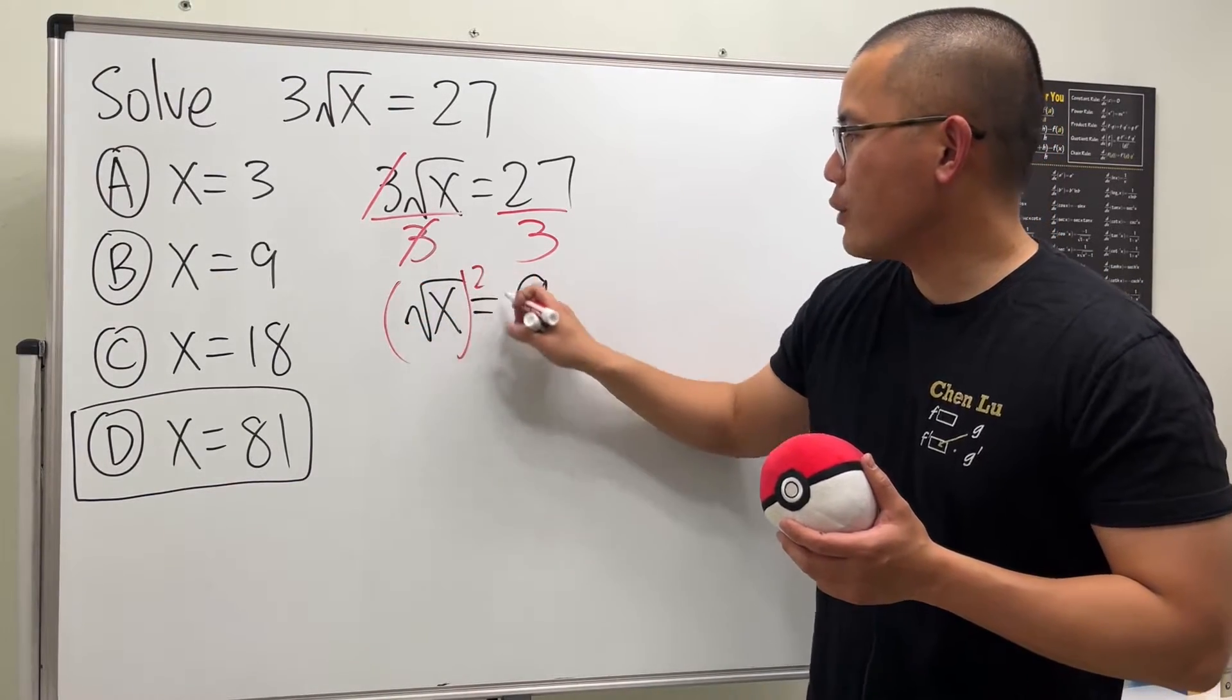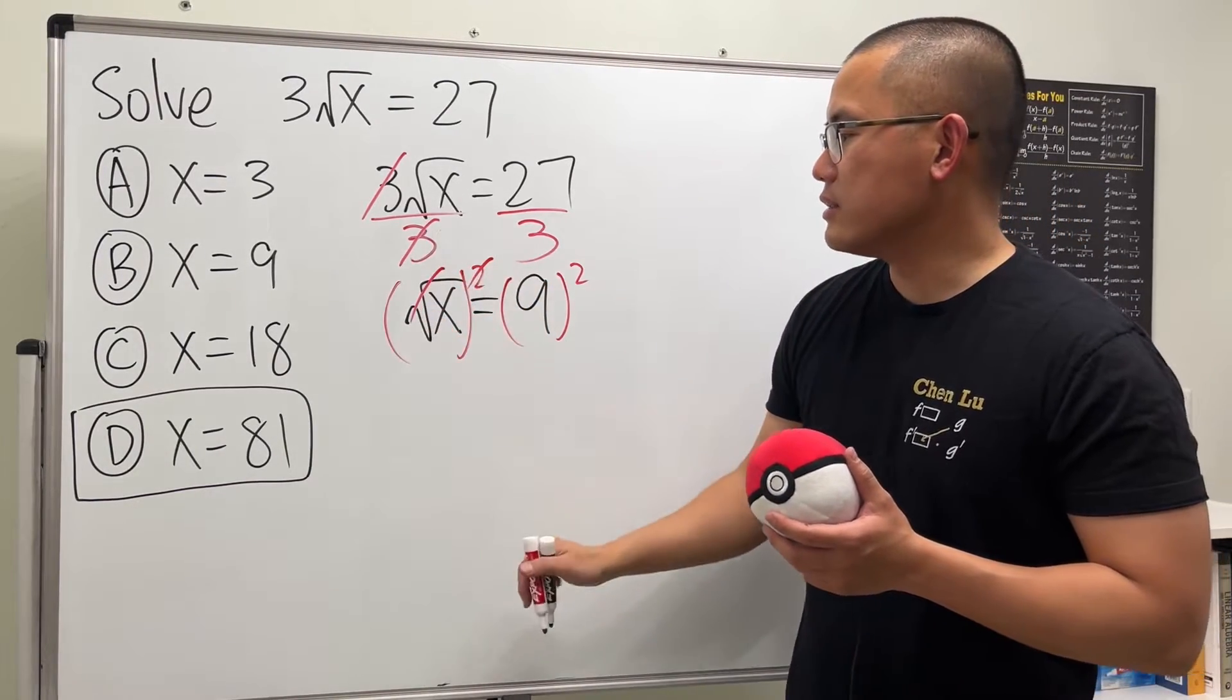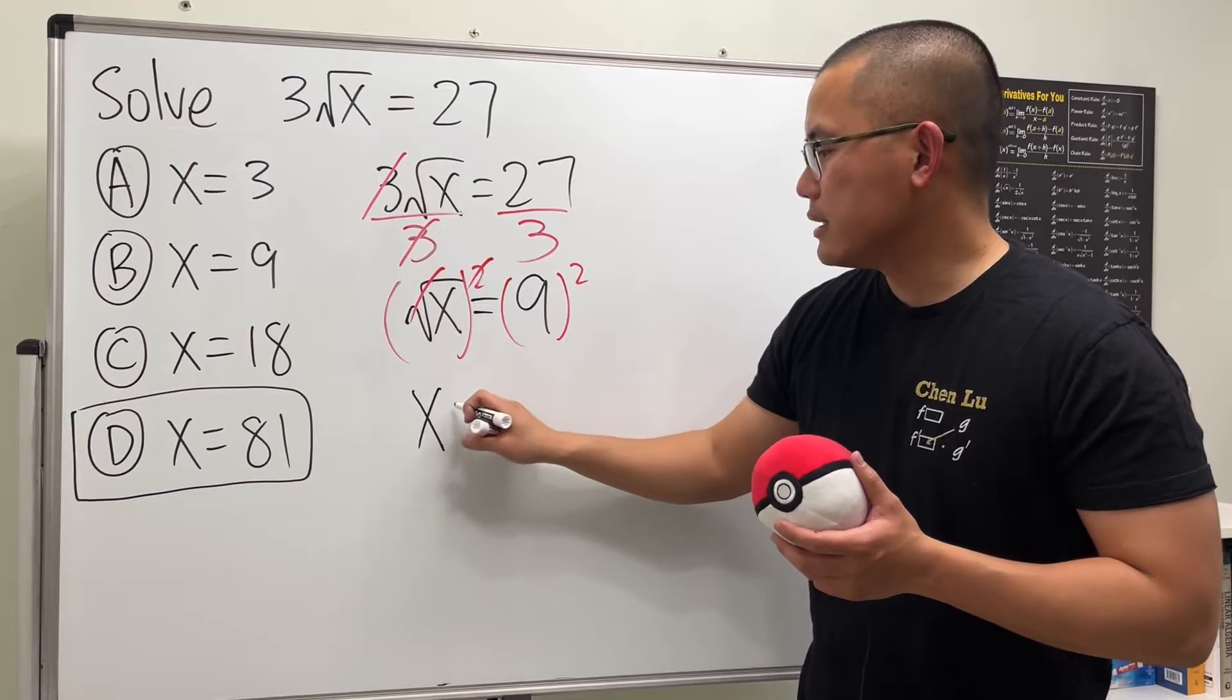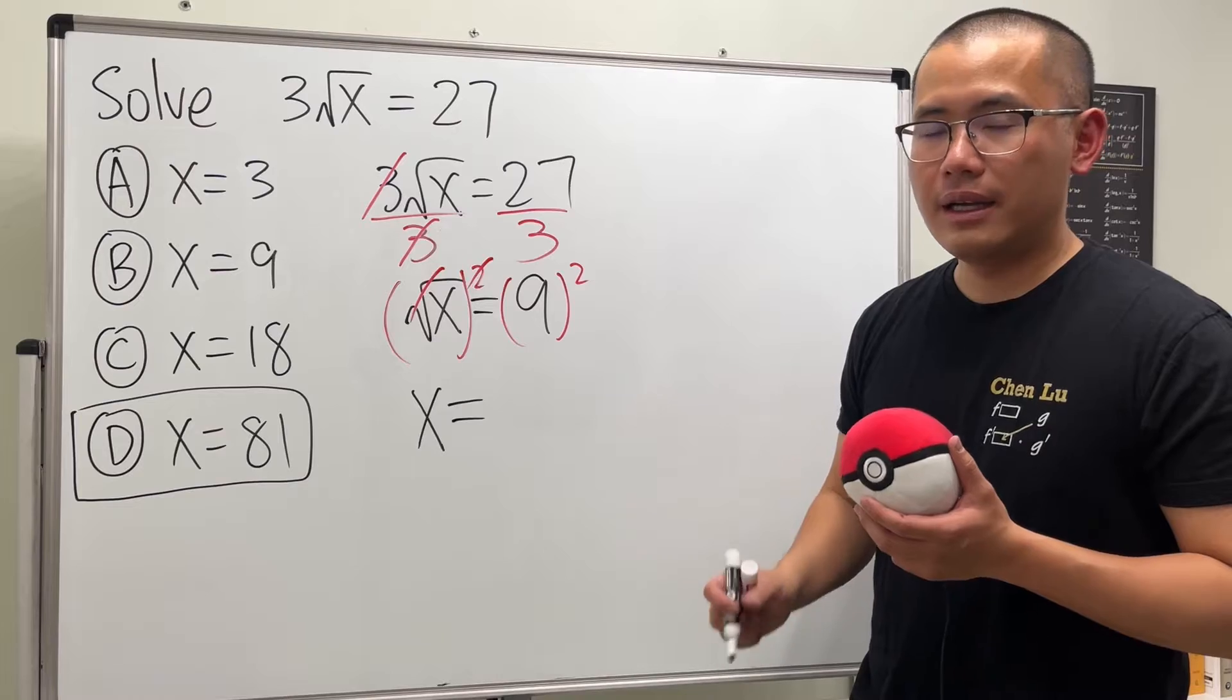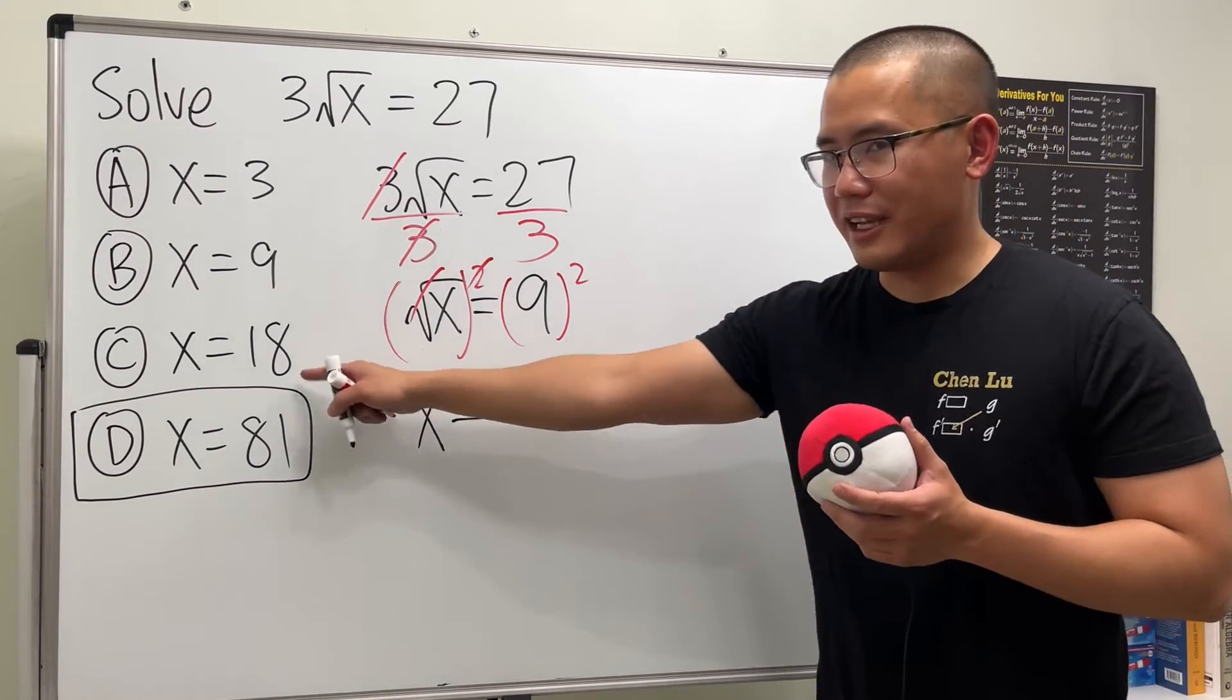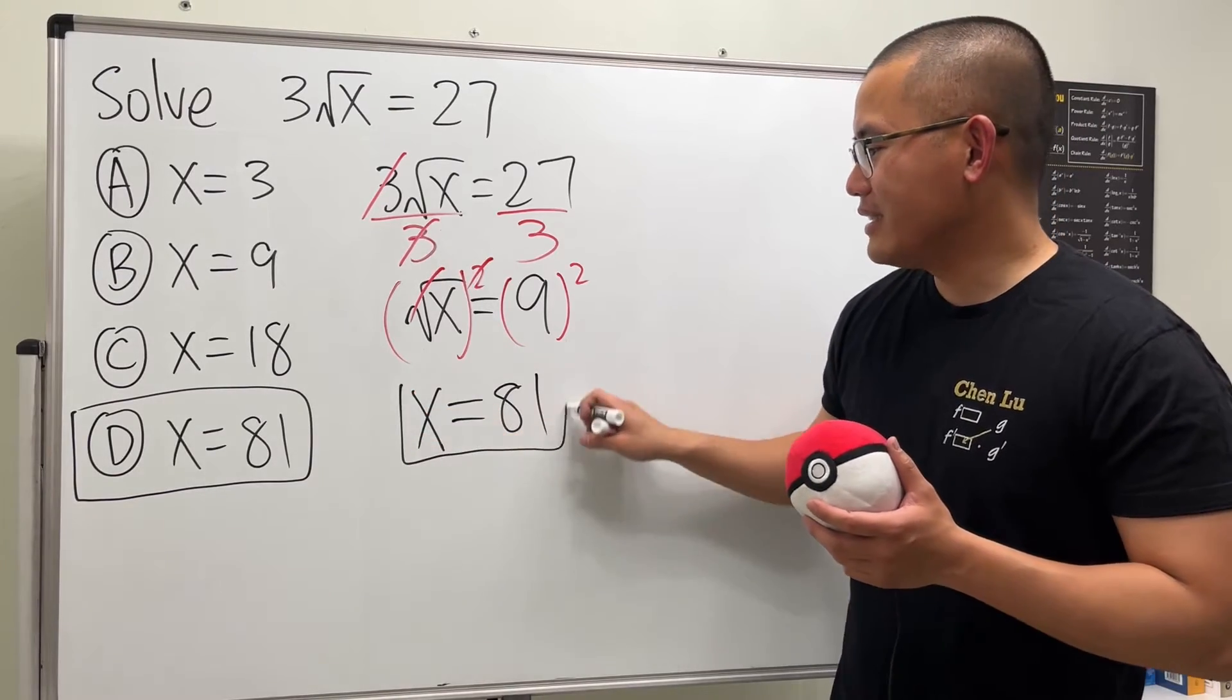So we raise this to the second power. Like, this is the square both sides method, right? So you see this and that can cancel. And we will just get x being equal to 9 to the second power, 9 times 9. Right? This is 9 times 9. 9 times 9 is 81. So that's how we end up with the answer over there.